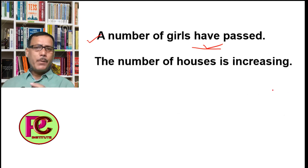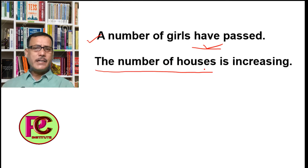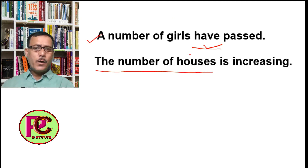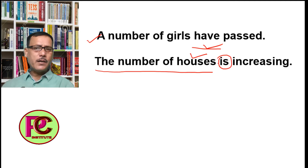Next: 'The number of houses is increasing.' Here, 'the number of houses' means 'the count of houses'. The subject here is 'the number', which means 'the quantity'. The noun that follows is plural, but the verb that comes is singular because the subject is singular.